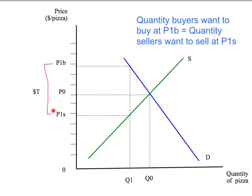The equilibrium is where the quantity is Q1, the price buyers pay is P1B — exactly T dollars above the price sellers receive P1S. Given the buyer price P1B, buyers would like to buy Q1. Given the seller price P1S, sellers would like to sell Q1. The amount buyers want to buy and the amount sellers want to sell is the same, so their plans are met, and the buyer price is exactly T dollars above the seller price.